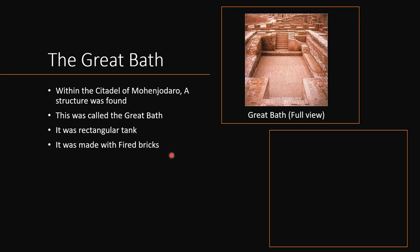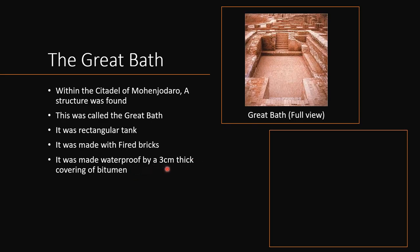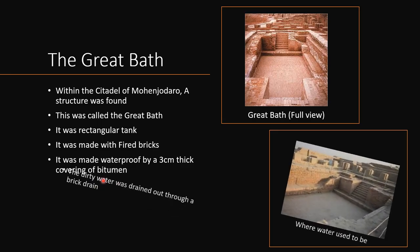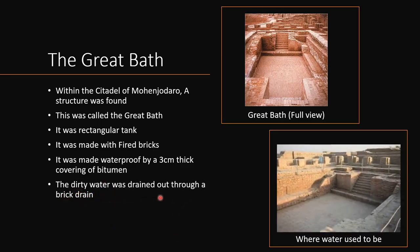The Great Bath was made with fired bricks. It was made waterproof by a 3 cm thick covering of bitumen — bitumen is a material also known as tar. The dirty water of the tank was drained out through a brick drain. Archaeologists think it may have been used in ancient times for bathing during important ceremonies or events.